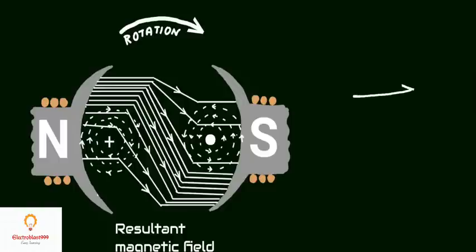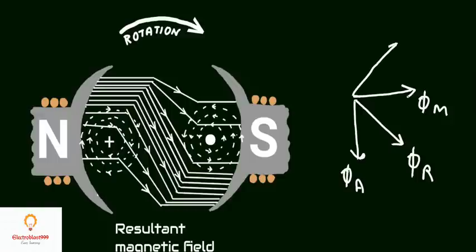The main flux is from north pole to south pole and the armature flux is in downward direction, so the resultant lies somewhere here. And we know that the MNA is always perpendicular to the flux. So MNA lies perpendicular to the flux, and this is our GNA, the geometrical neutral axis.